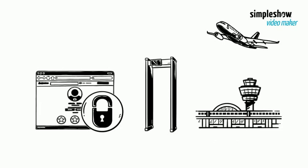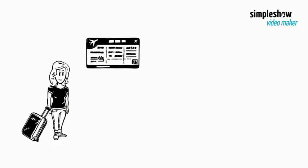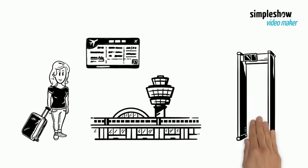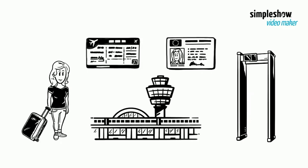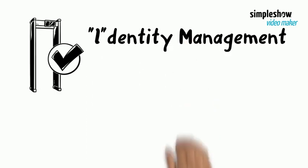Let me give you a familiar example in our physical life. This is Katie. Katie is flying to travel. Katie checks in online, downloads the boarding pass to her mobile phone, rides to the airport, and walks directly to the security gate. She shows her driver's license to the TSA staff and goes through the security gate without any problems. This airport security check, in the digital world, is an identity management activity — the I part in IAM.